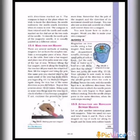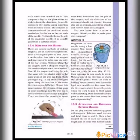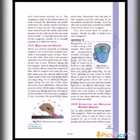Take a rectangular piece of iron and place it on the table. Now take a bar magnet and place one of its poles near one edge of the iron bar. Move the bar magnet along the length of the iron bar towards its other end. Repeat this process placing the pole near one edge and moving along to the other edge.